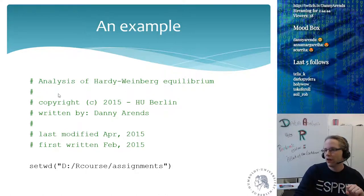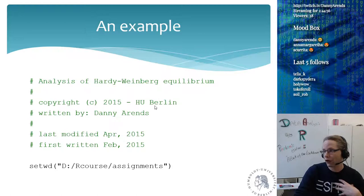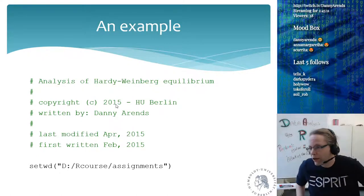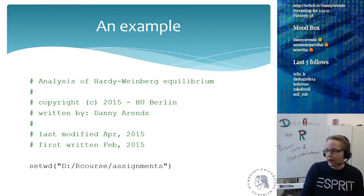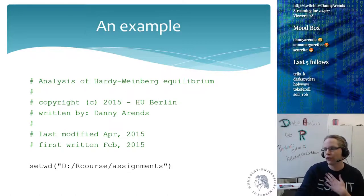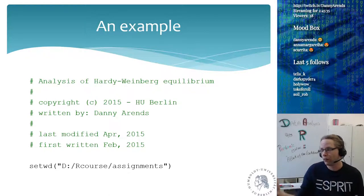Here's how my scripts generally look: the script starts by moving to a directory, states the purpose — for example 'analysis of the Hardy-Weinberg equilibrium' — includes copyright info, author name, last modification date, and first written date. This helps you remember what you did. If in 10 years you go back to the R course, you have all the powerpoints and assignments neatly packed in directories with your own answers in each assignment folder.